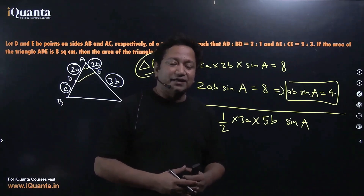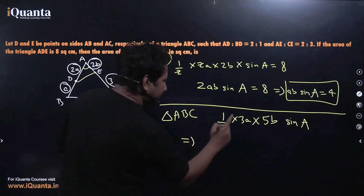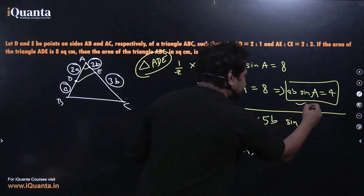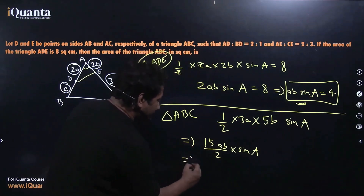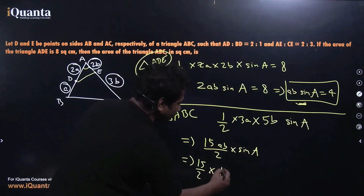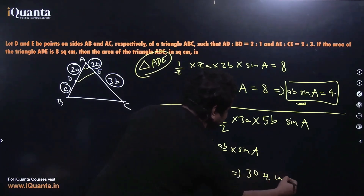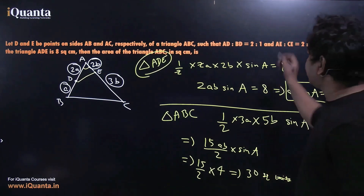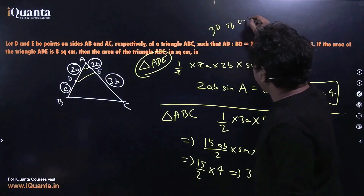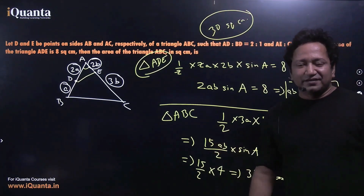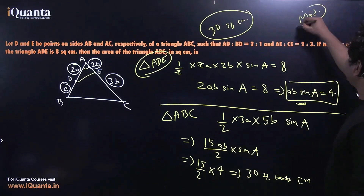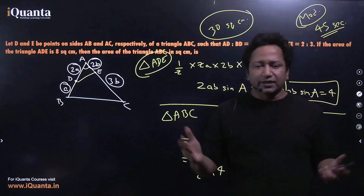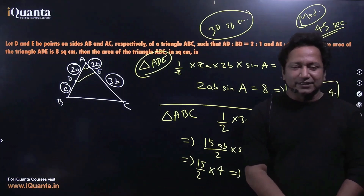For triangle ABC, using the same formula: Area = ½ × AB × AC × sin A = ½ × 3a × 5b × sin A = (15/2)·ab·sin A. Since ab·sin A = 4, substituting gives (15/2) × 4 = 30 square centimeters. This is a TITA question with no options, but the answer is 30. I would rate this question as moderate — it takes no more than 45 seconds if you know the formula using the sine of an included angle.